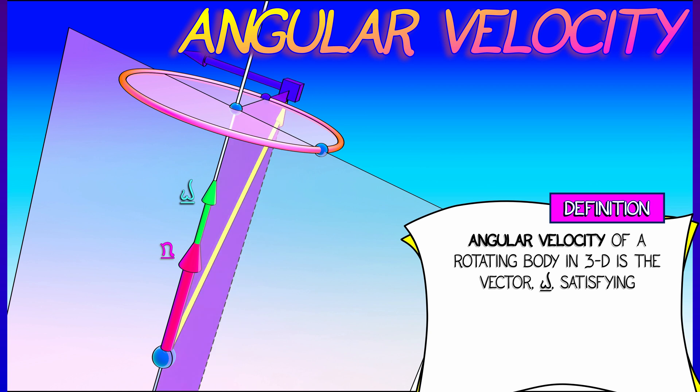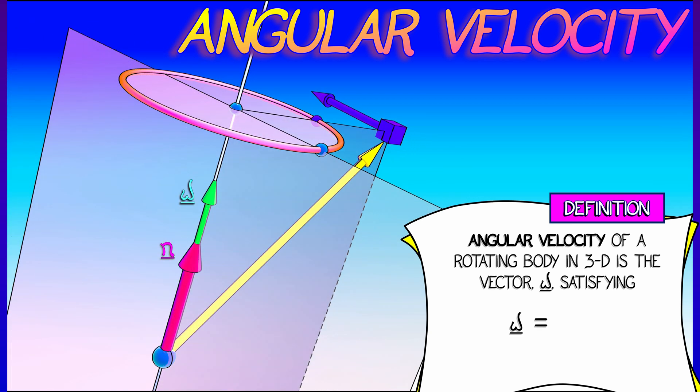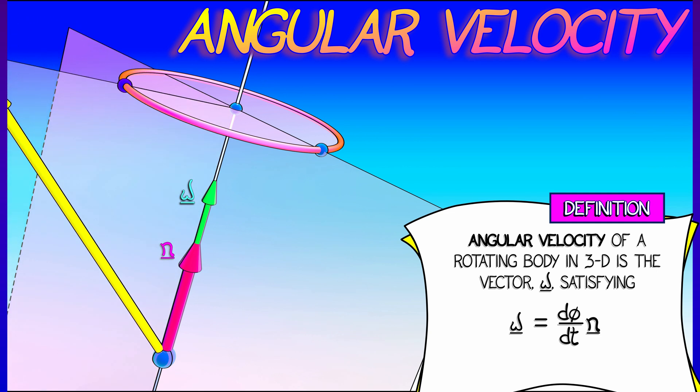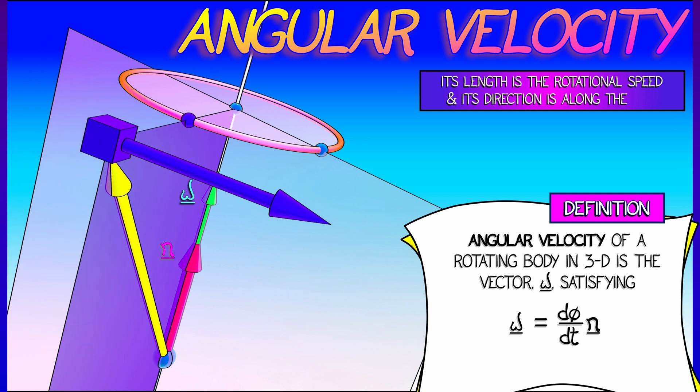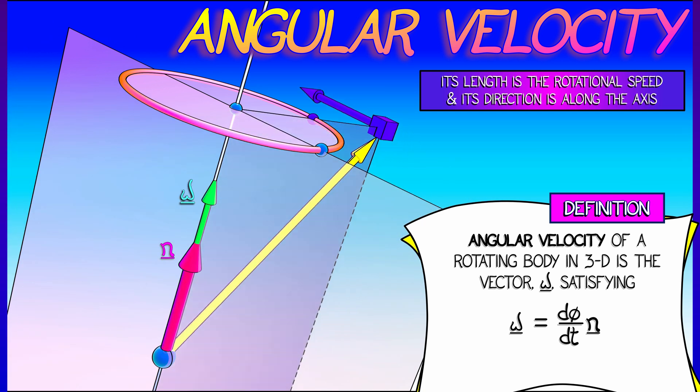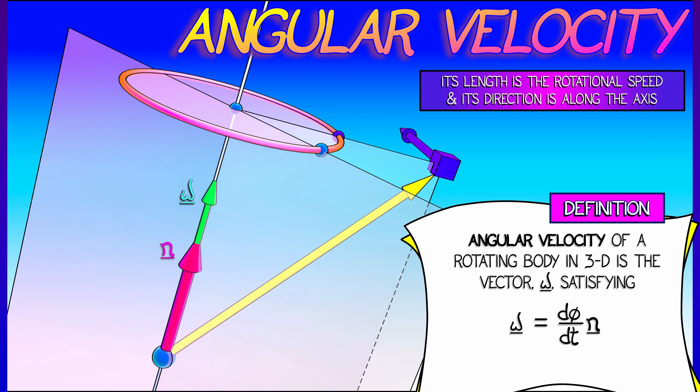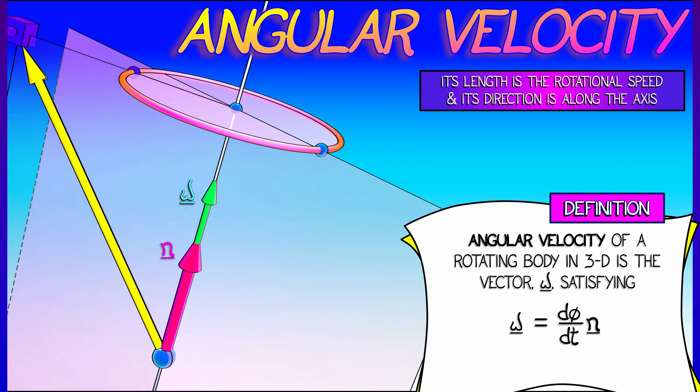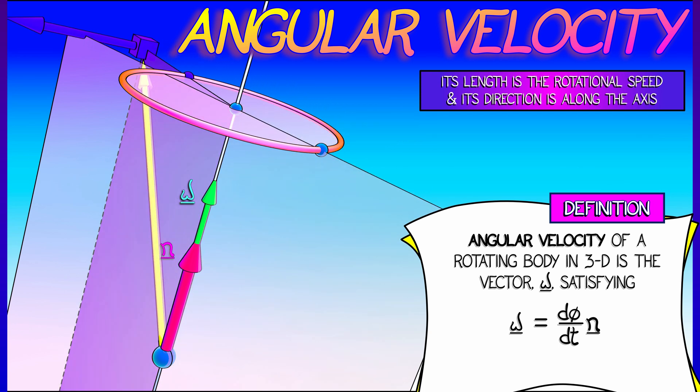We say that omega is the vector that satisfies omega equals d phi dt times n. That is, when I say d phi dt, I mean the rate of change of the angle that the mass element is making about that axis of rotation. So that's the magnitude of omega, and then the direction is in that vector along the axis of rotation.